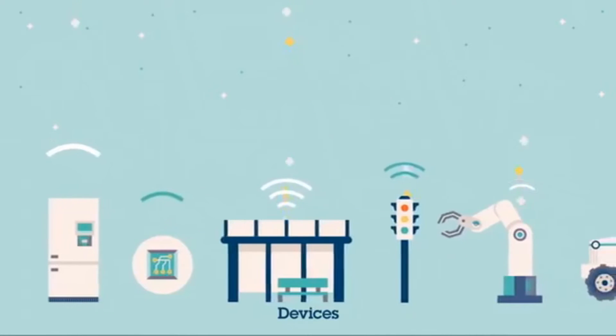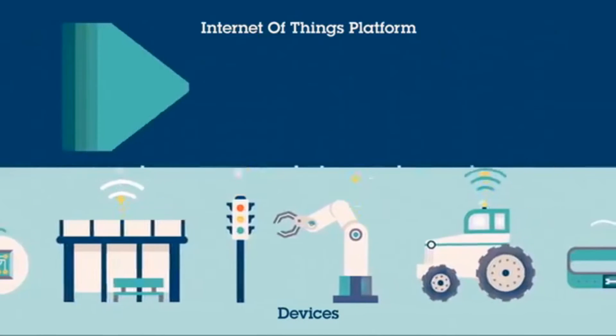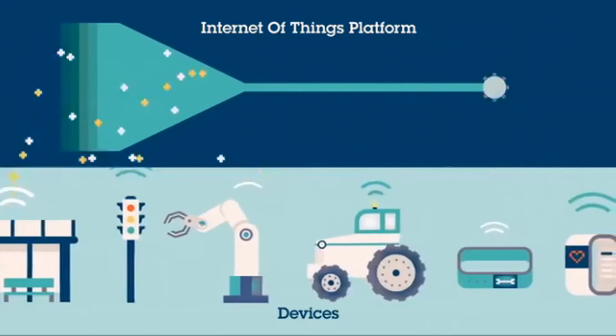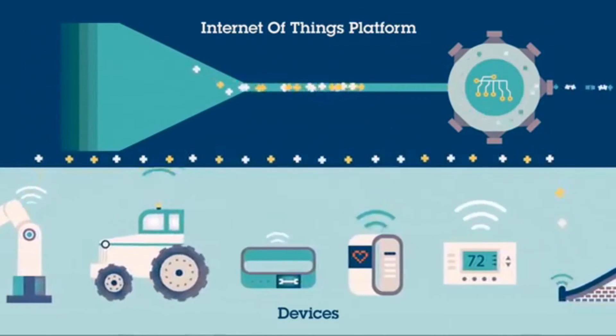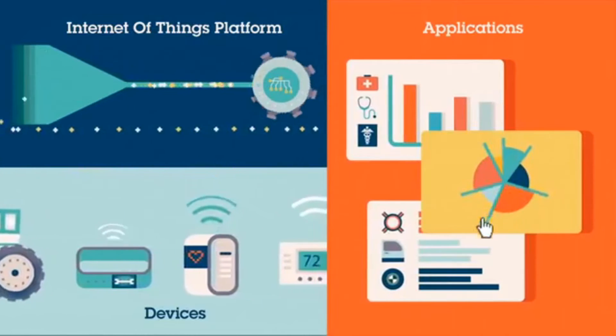The process starts with the devices themselves, which securely communicate with an Internet of Things platform. This platform integrates the data from many devices and applies analytics to share the most valuable data with applications that address industry-specific needs.